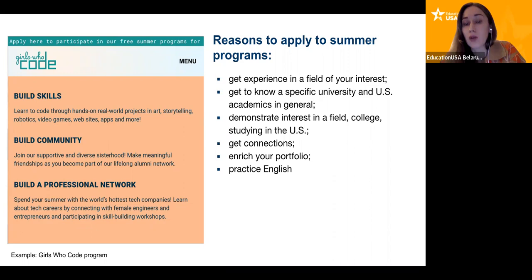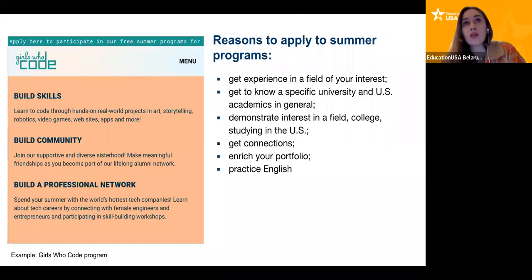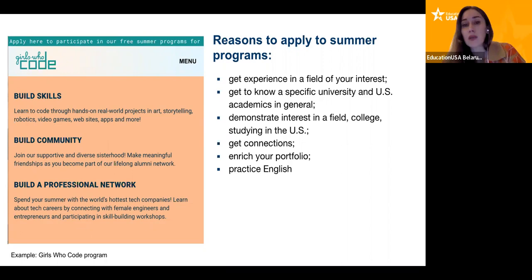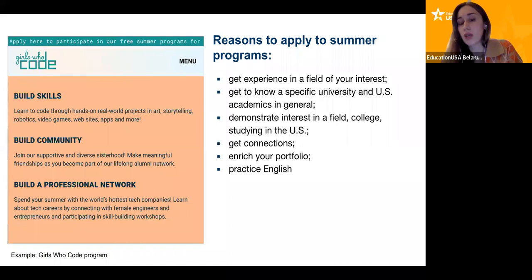There are several reasons why you should apply to summer programs if you find such opportunities. First of all, you can get experience in the field of your interest. If you want to major in biology or chemistry, getting to a summer school with a focus on chemistry will be a great opportunity to work in the lab, do some research, and learn different aspects of that subject. Summer programs in the US, especially for international students, allow you to understand US culture and campus life — you can try studying as an American student and figure out if such education is for you.